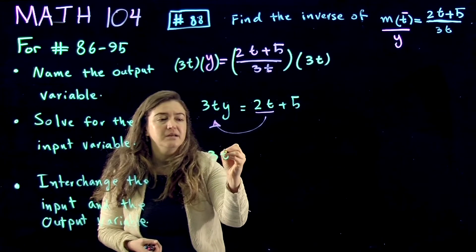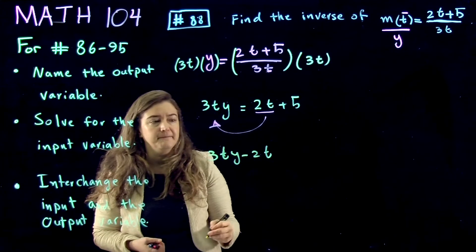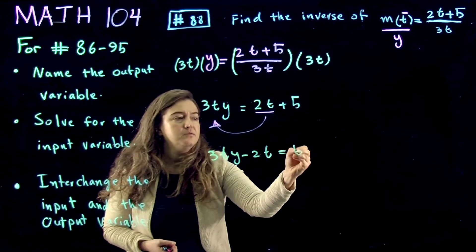So we end up with 3ty minus 2t equal to 5.